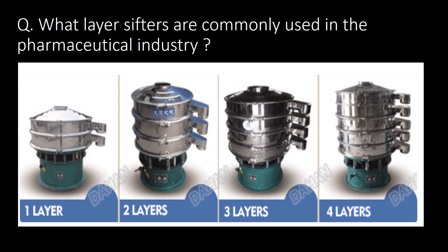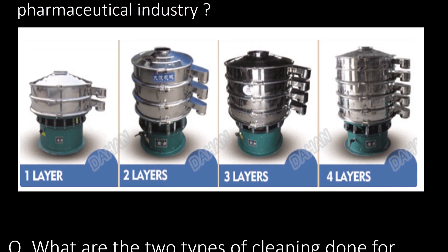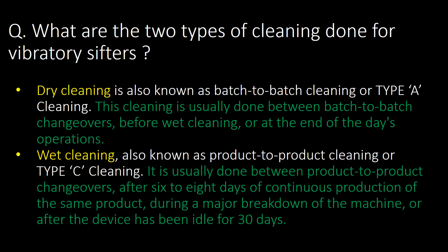What are the two types of cleaning done for a vibratory shifter? The first type is dry cleaning, which is usually done between batch-to-batch changeovers, before wet cleaning, or at the end of day's operation. The second type is wet cleaning, also known as product-to-product cleaning.